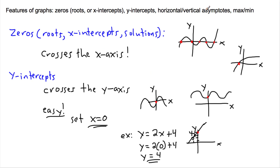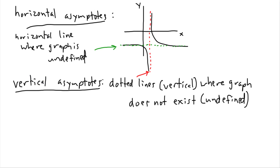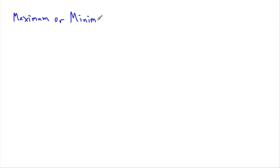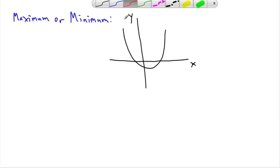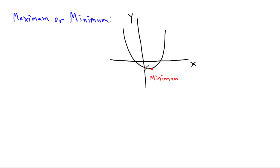Now let's talk about maximums and minimums — those are fairly easy. Let's say I have a graph that's a quadratic, something like a U-shape. That has a minimum value — in other words, there's a value of y that is as small as it gets. In this case, the minimum value might be negative two, so the minimum would be negative two.